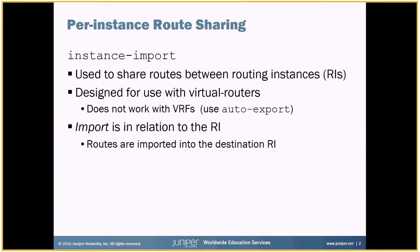The instance import feature is one of a few options and features on Junos devices that you can use to share routes between routing instances or routing tables. Typically it's designed for use with virtual routers, and in particular it doesn't work with VRFs. For those setups you'll need to use a different feature called auto export.